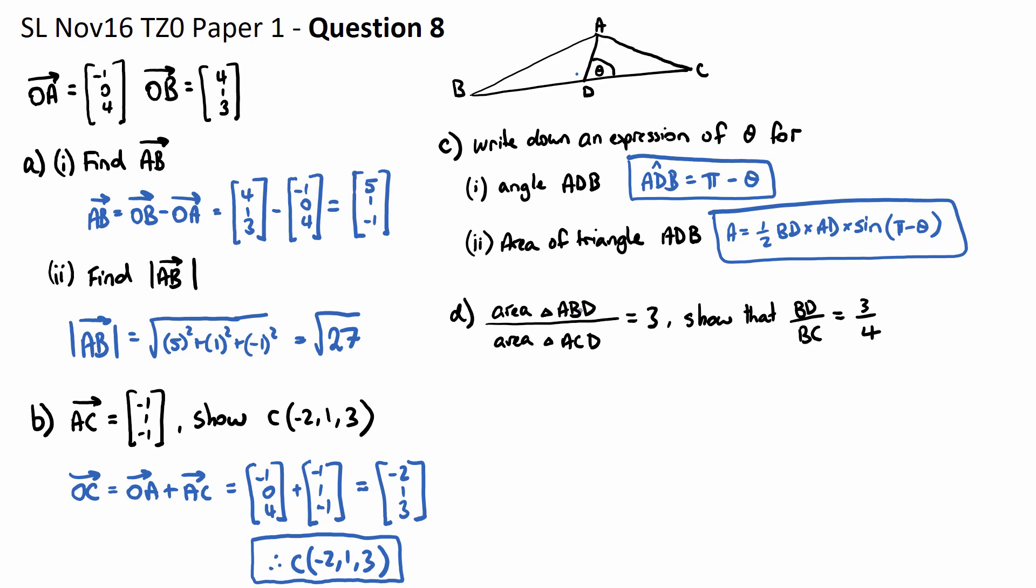So we know an expression for the area of ABD. We did that in part C of this question. That's just a half times BD times AD times sine of 180 or pi minus theta.